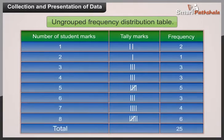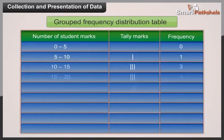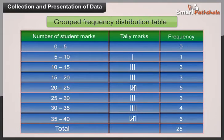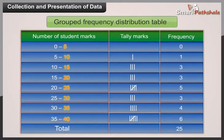Ungrouped frequency distribution table: it makes a frequency count for each unique observation separately. Grouped frequency distribution table: we create groups known as classes or class intervals. In each class, the least number is called the lower class limit, and the greatest number is called the upper class limit.